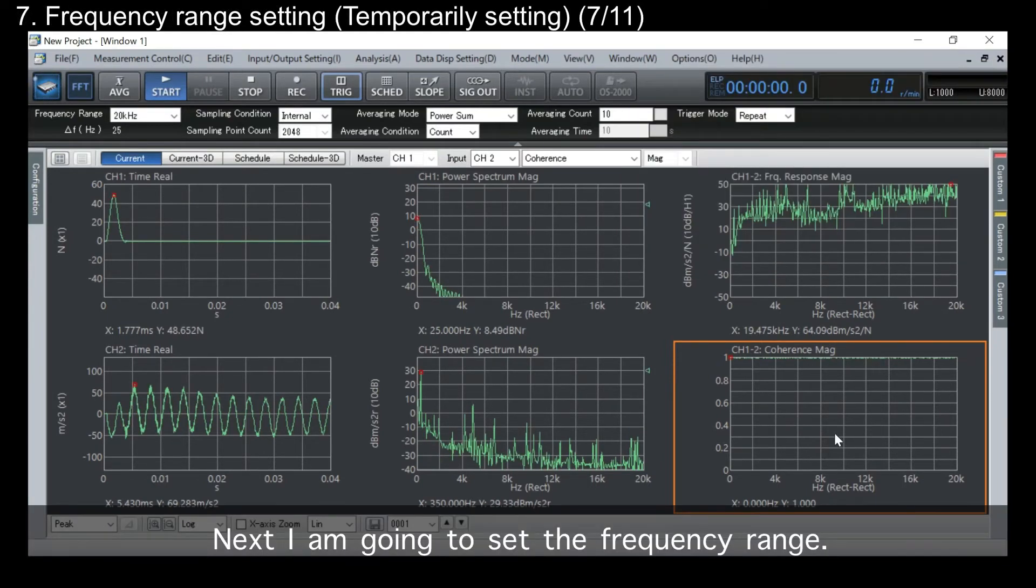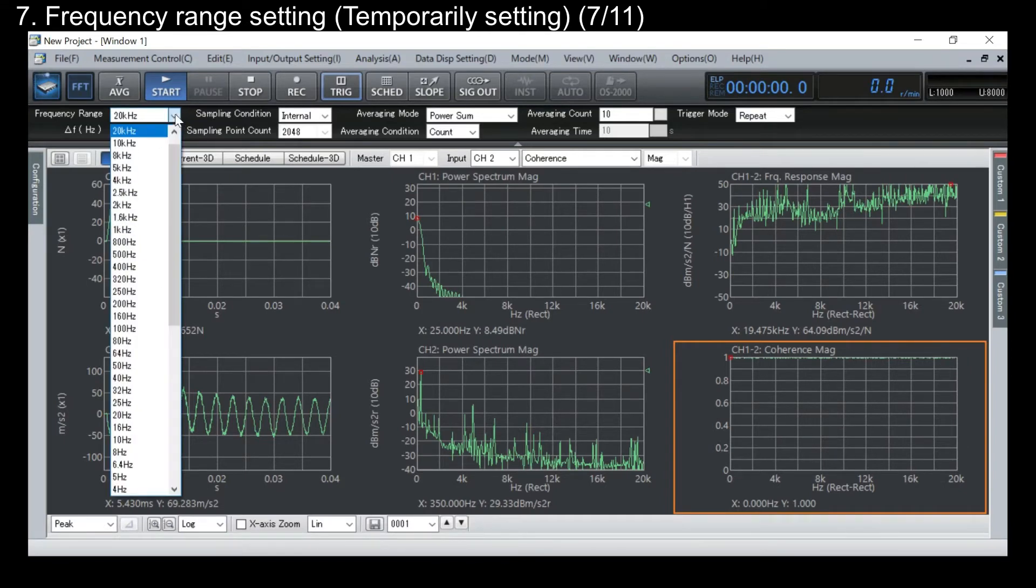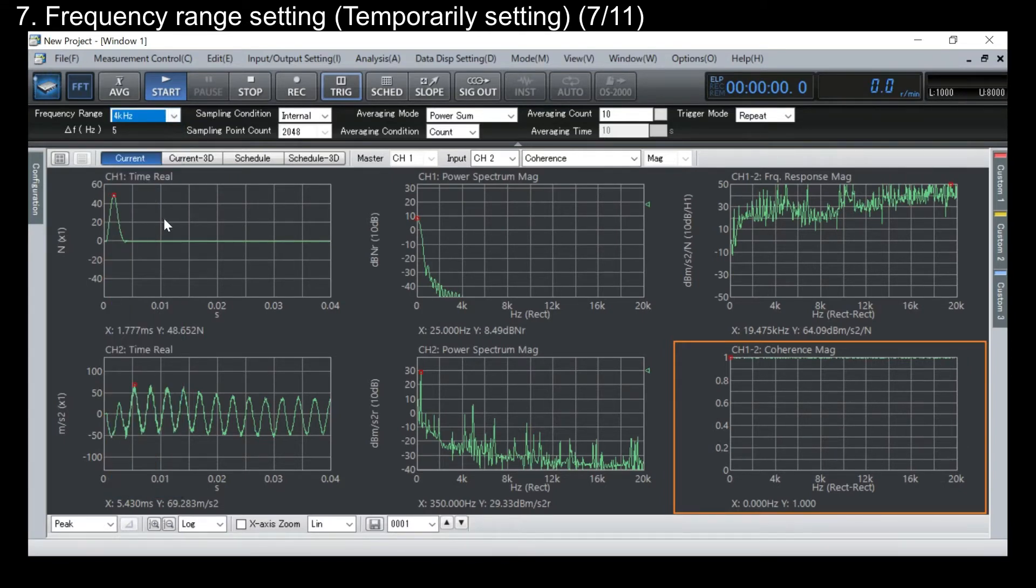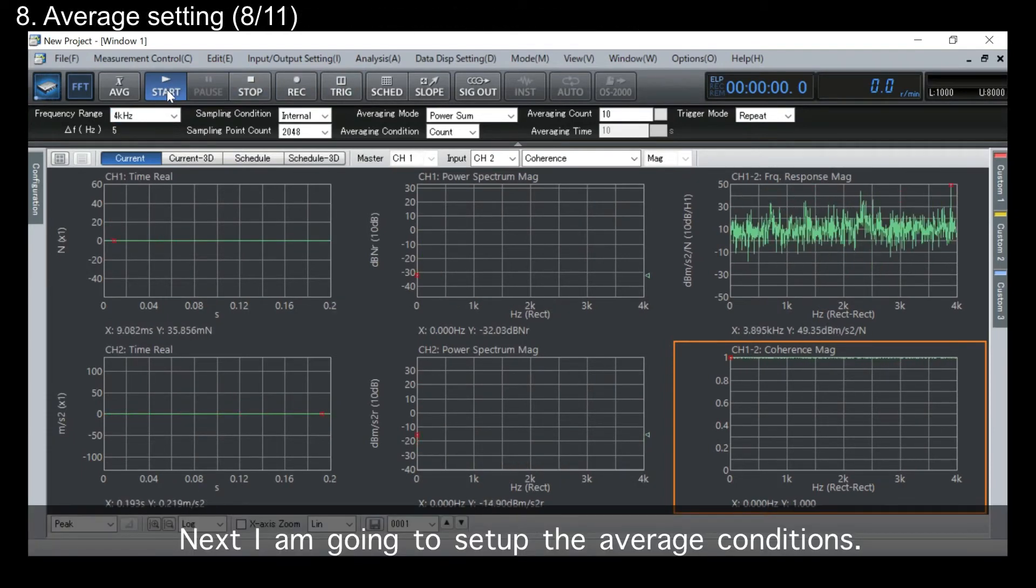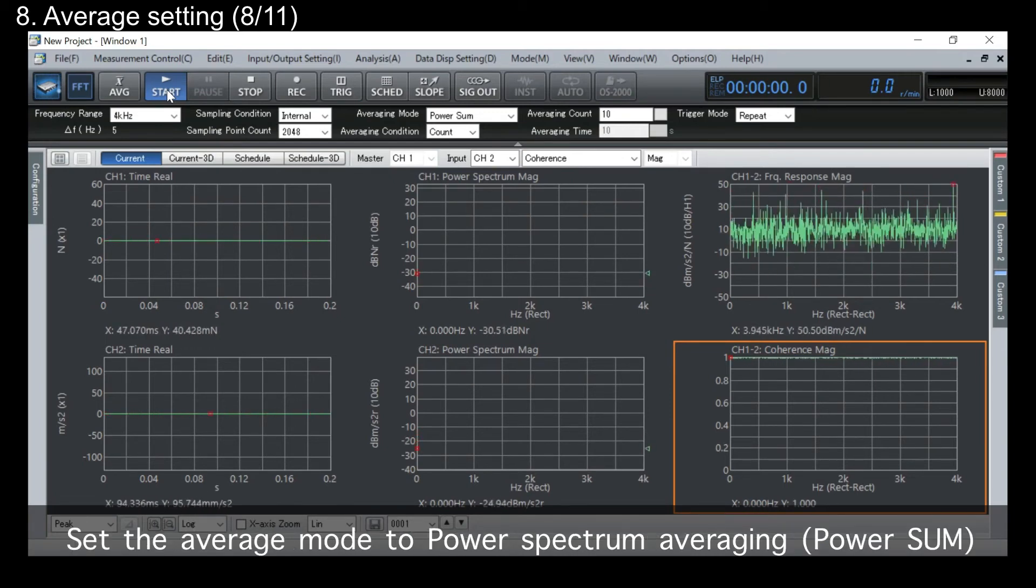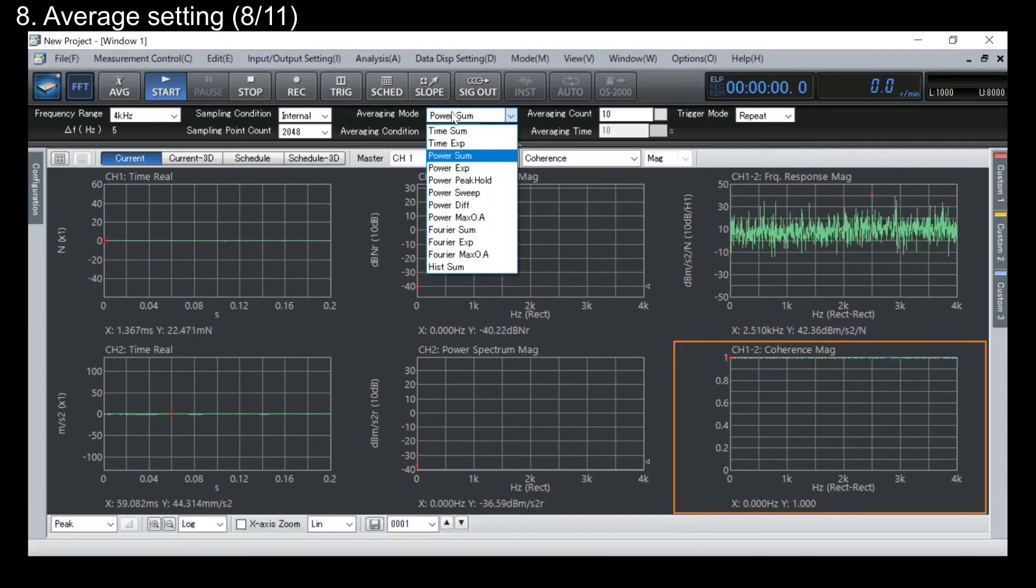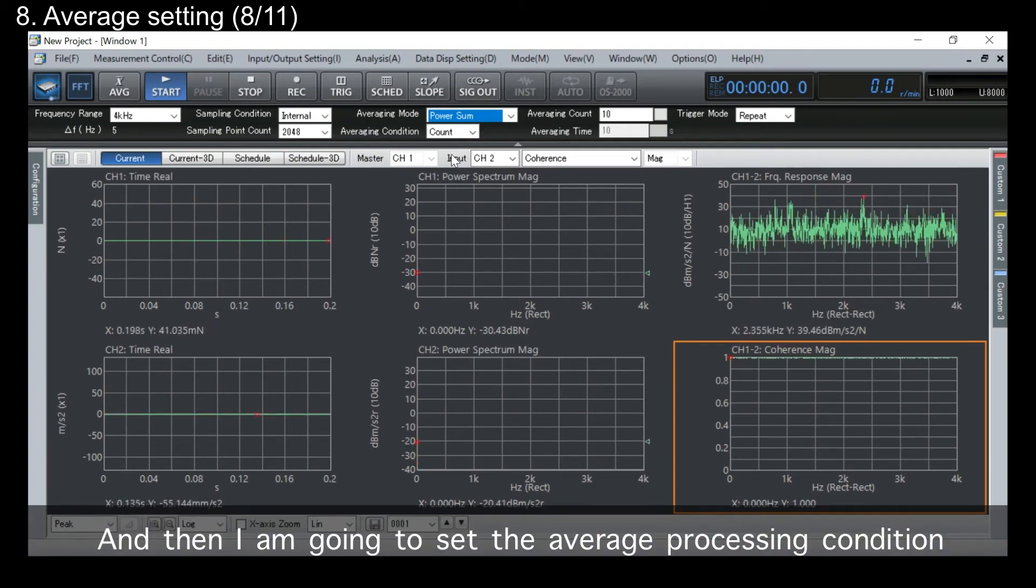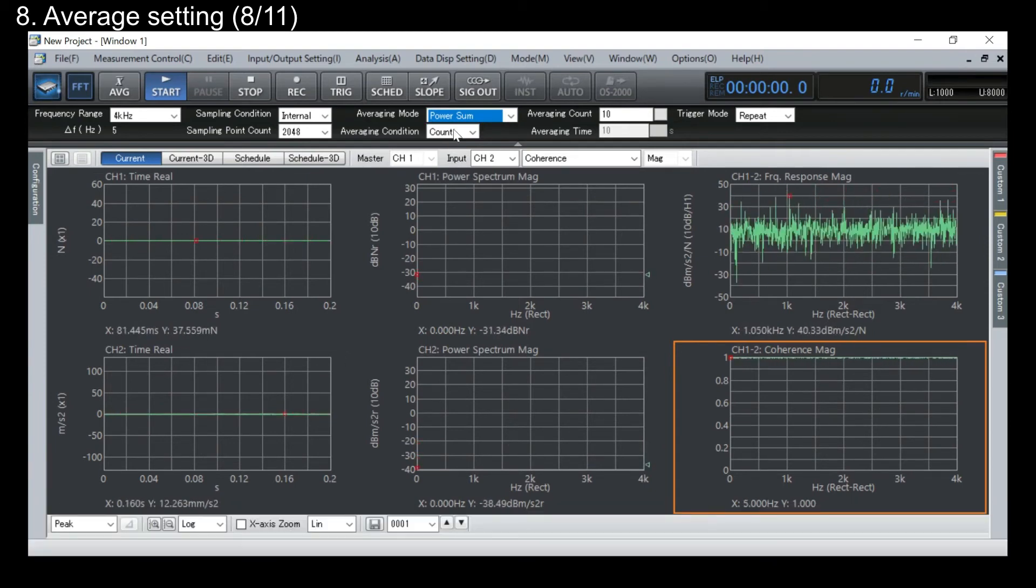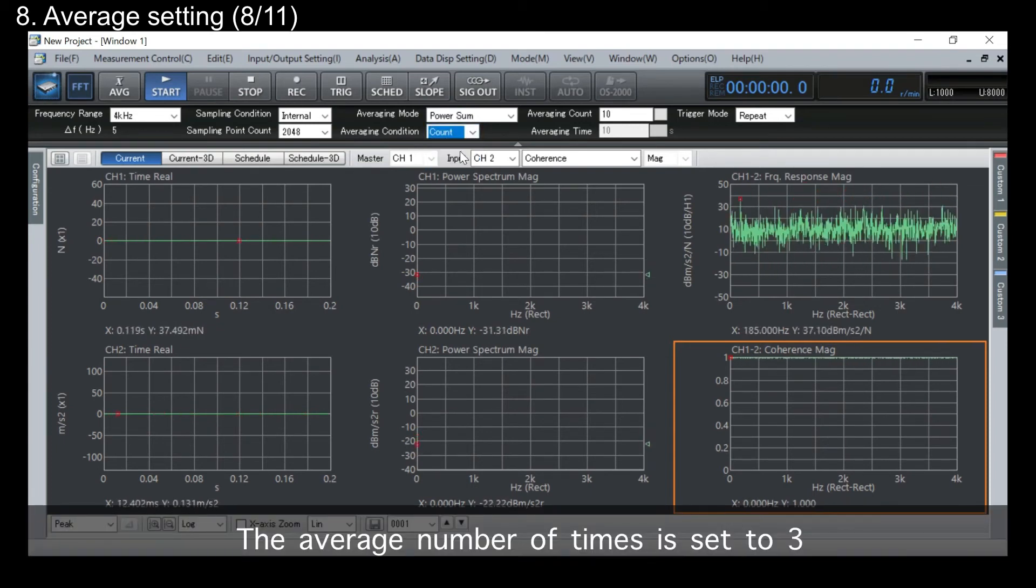Next, I'm gonna set the frequency range. And then, I'm gonna set the average processing condition to the count. The average number of time is set to 3.